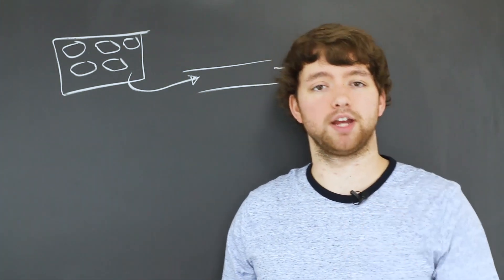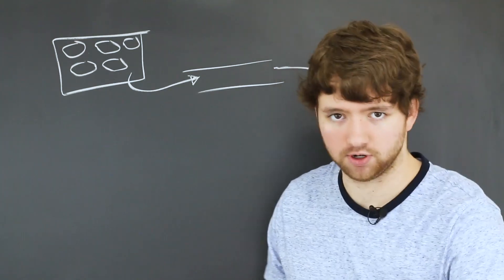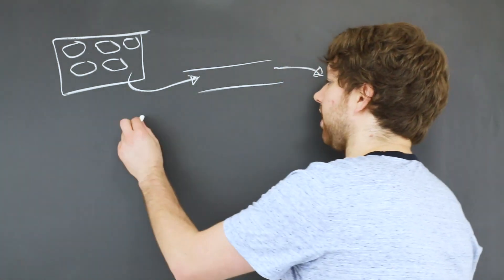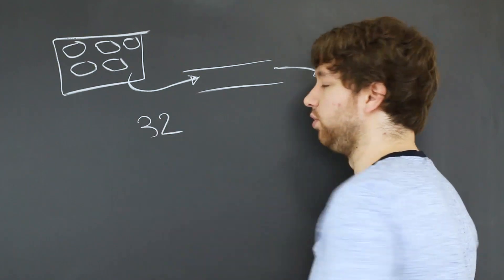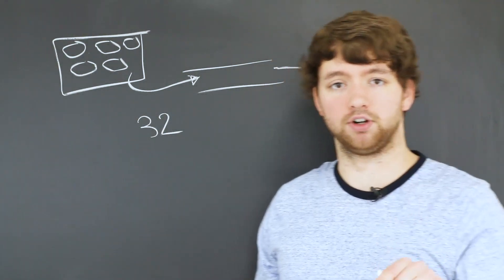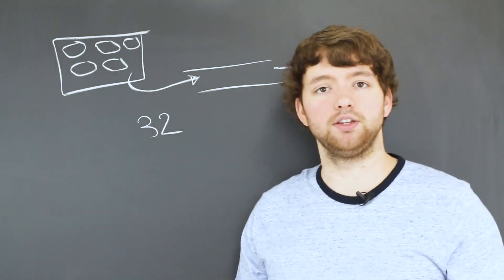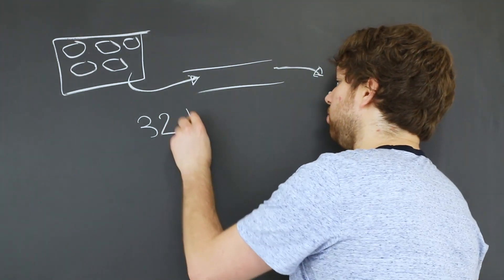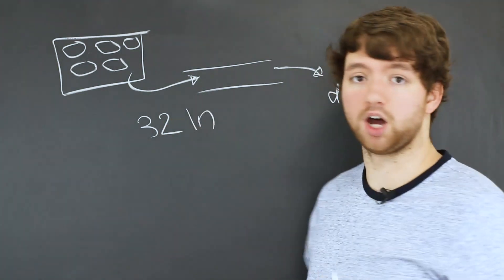So let's say we create an application and it asks for your age. Well, let's say we put in the value 32 and then we press enter. Well, what actually gets put into the input stream is 32 and then the newline.